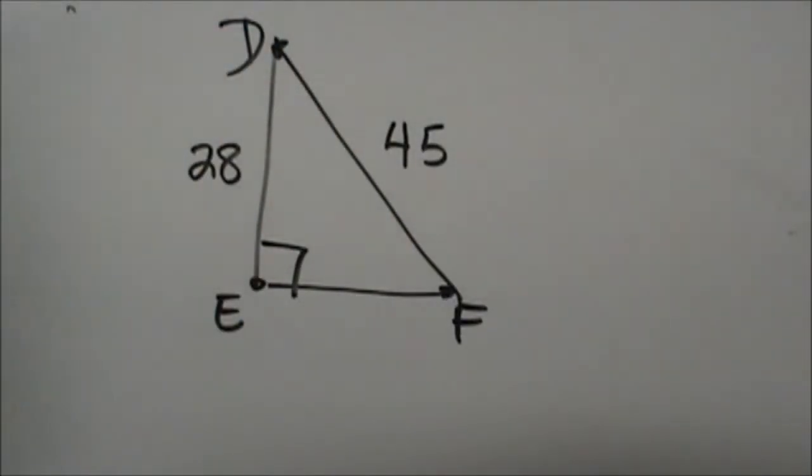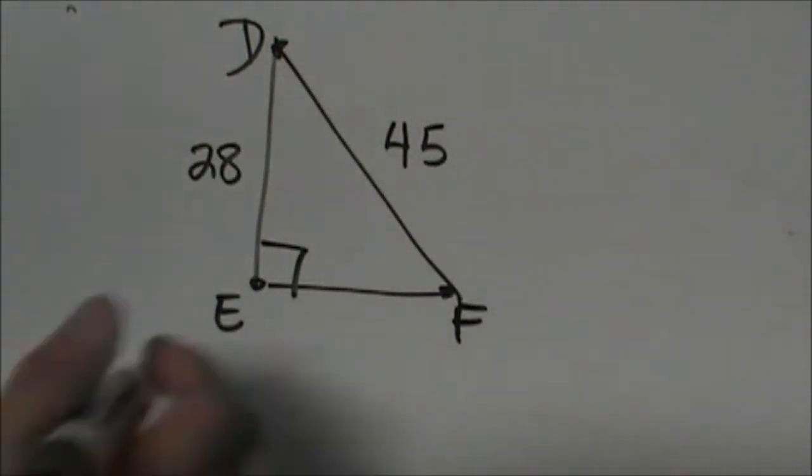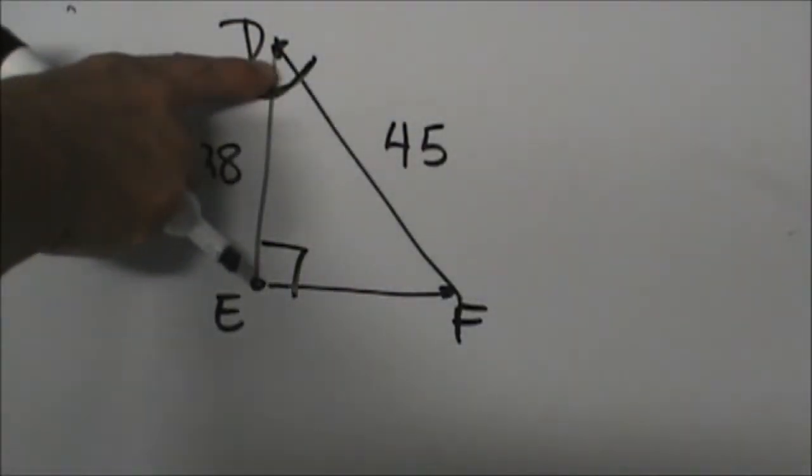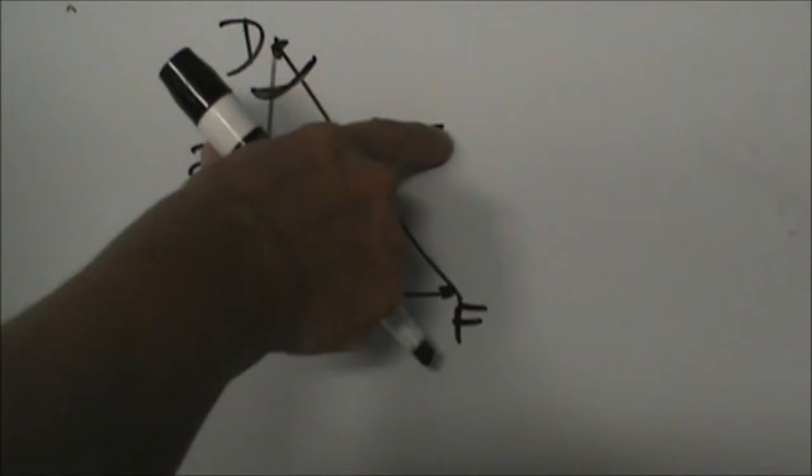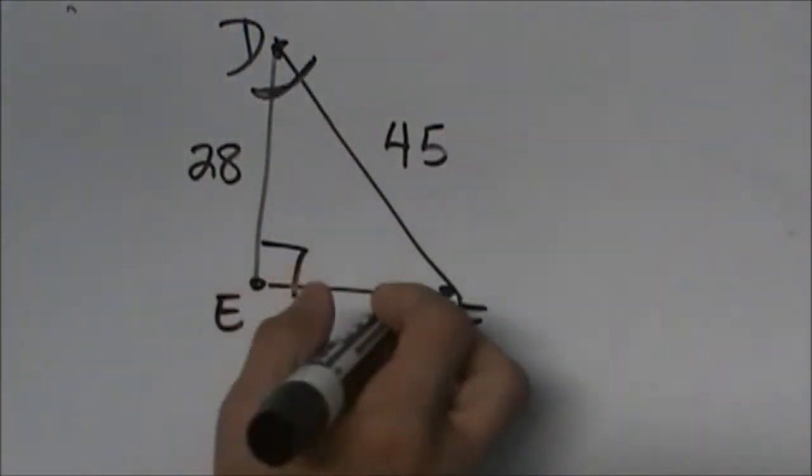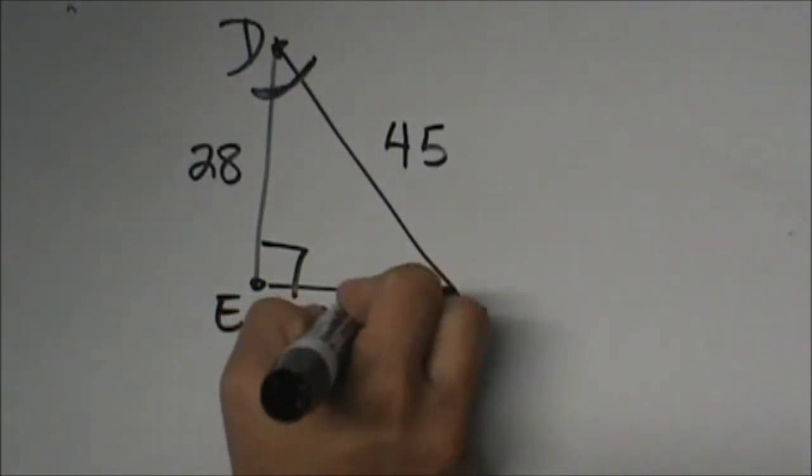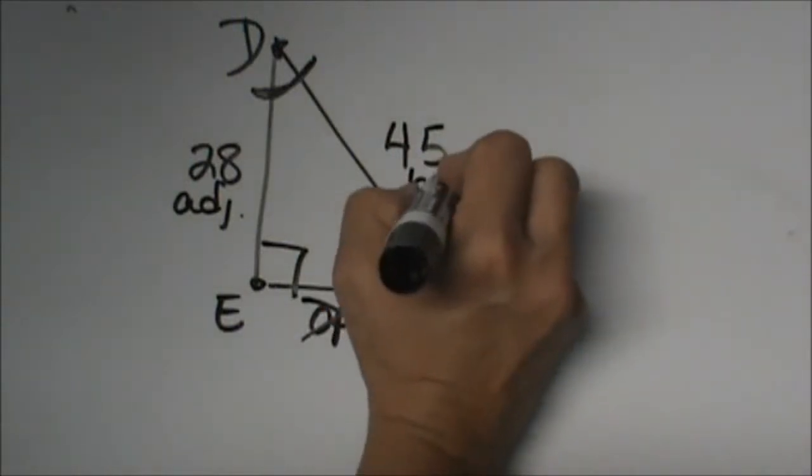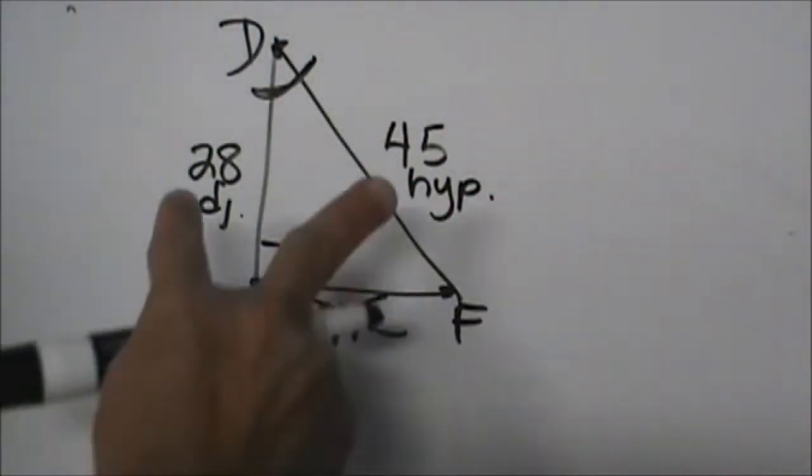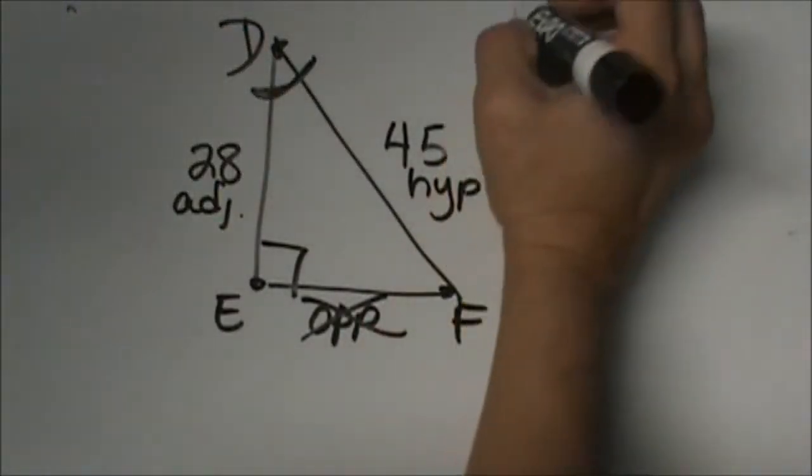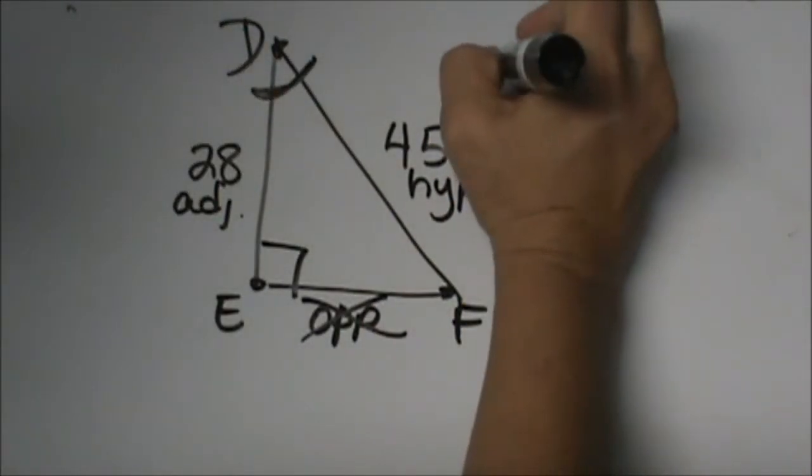First, decide which is our unknown angle. D is where we're working from. So from this reference angle, which two sides do we have? This side over here is our opposite, and we're not using it. We have the adjacent and we have the hypotenuse. Which trig function uses adjacent and hypotenuse? Cosine, so we're going to use the cosine function.